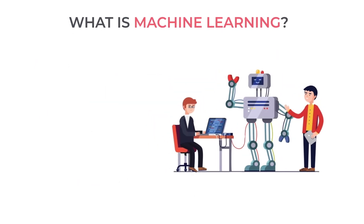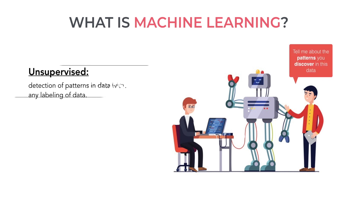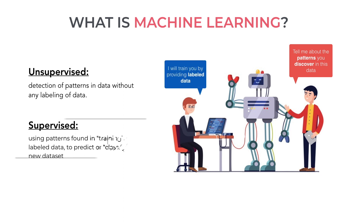Machine learning can be separated into two main categories of methods. Unsupervised machine learning focuses on detection of patterns in data. The main idea is to apply techniques that are automated and rely on various assumptions about data to learn from it. The second main category is supervised machine learning. These methods rely on the availability of training data — data that has already been labeled. Once a dataset of labeled data is accumulated, it can be used to train a model that will be able to apply this knowledge to analyze new data, for example by predicting its class.